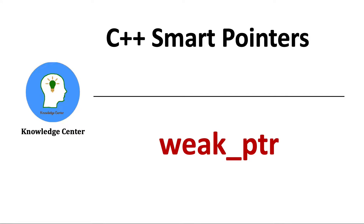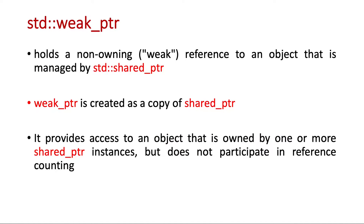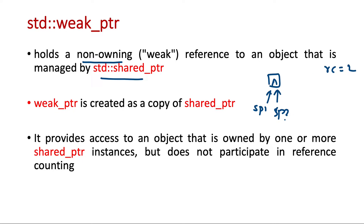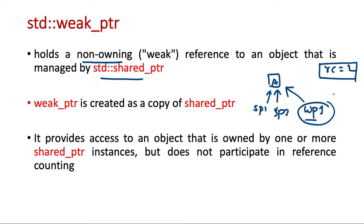In this video we will study about another smart pointer called weak pointer. A weak pointer holds a non-owning reference to an object that is managed by a shared pointer. If we have one object with two shared pointers pointing to it, the reference count is two. If we add a weak pointer pointing to the same resource, the reference count will still remain two — the weak pointer plays no role in the reference counting mechanism.